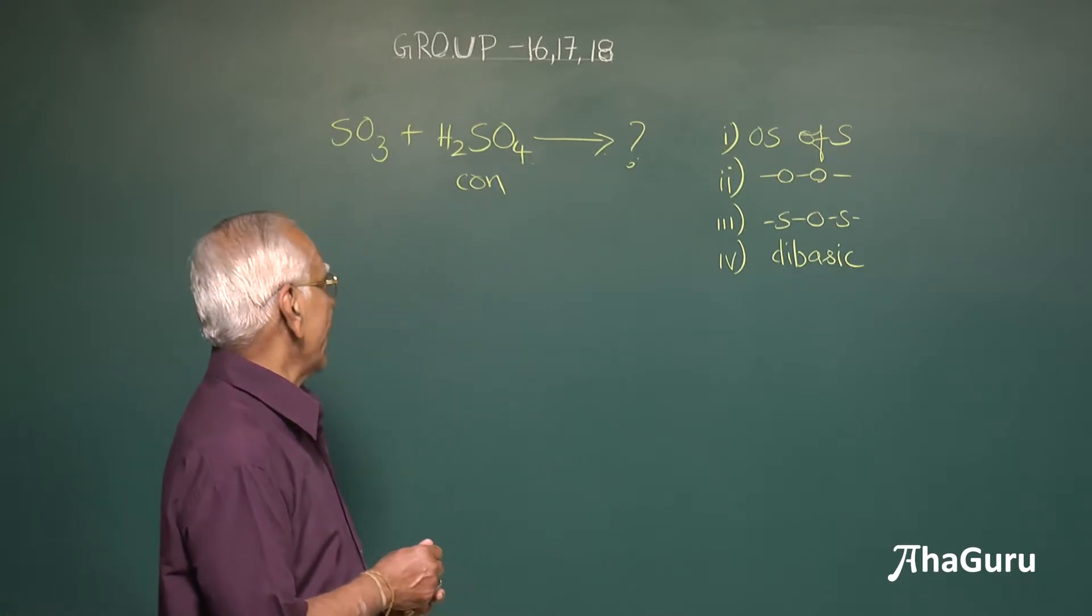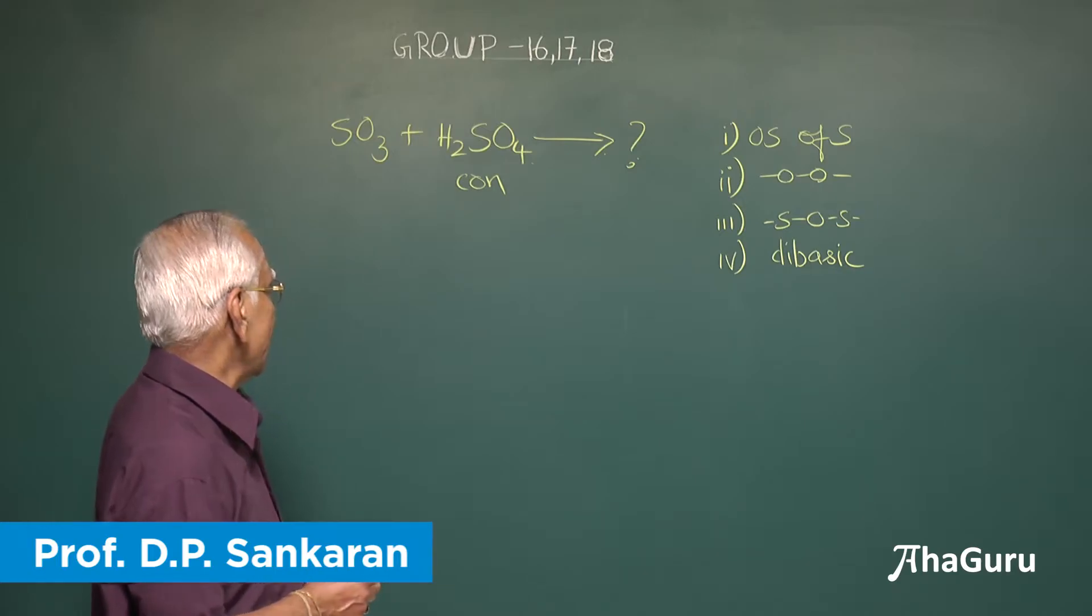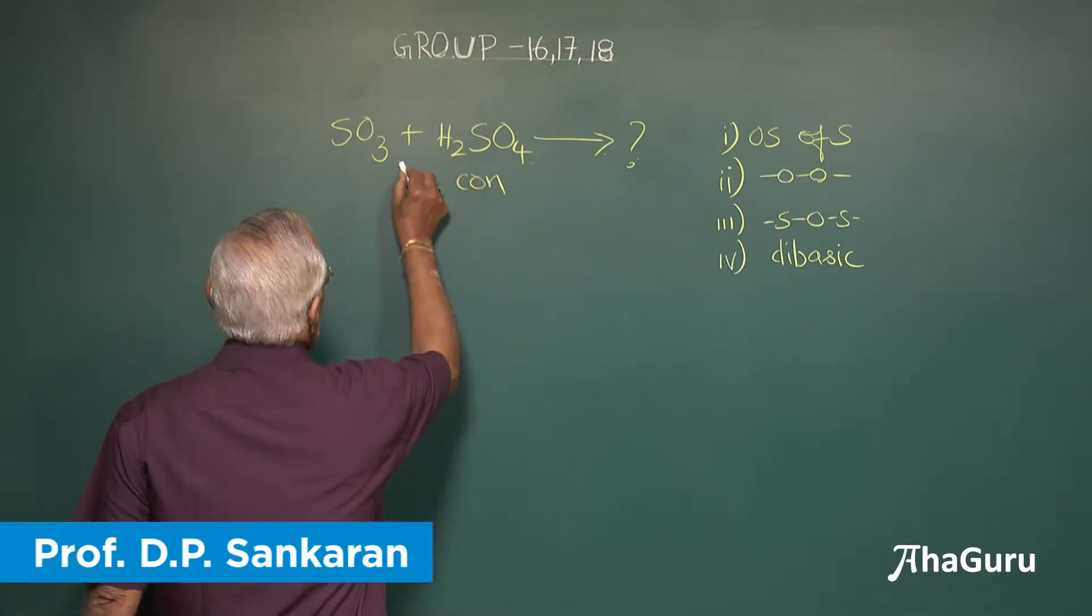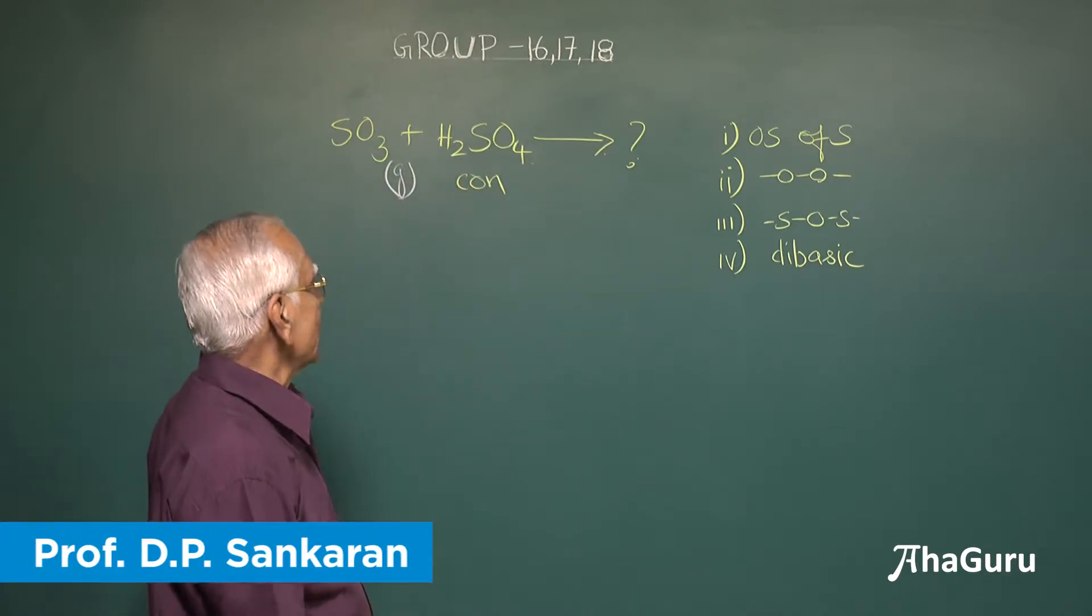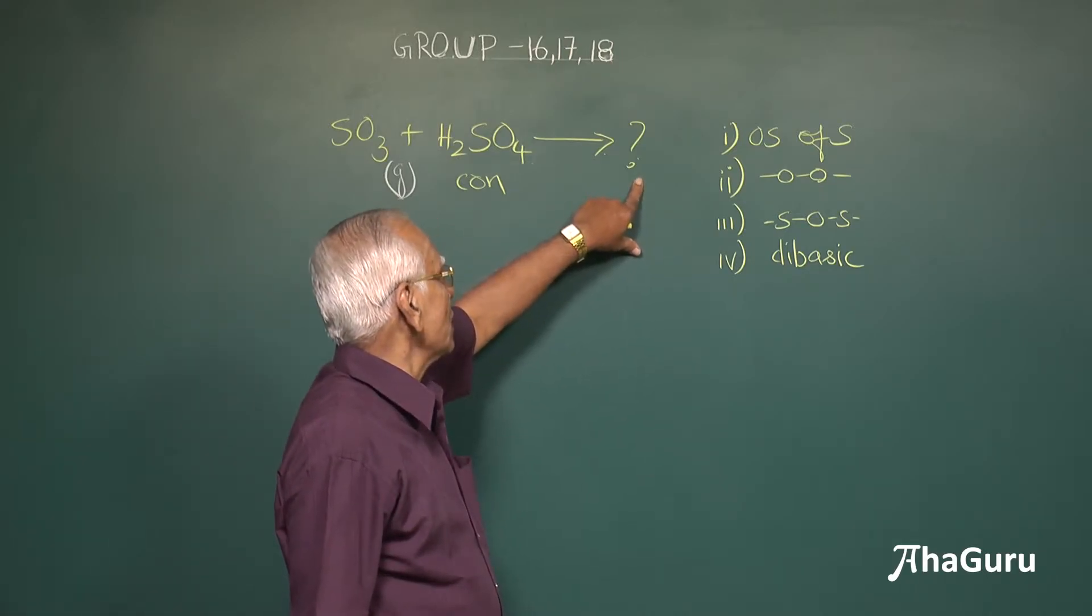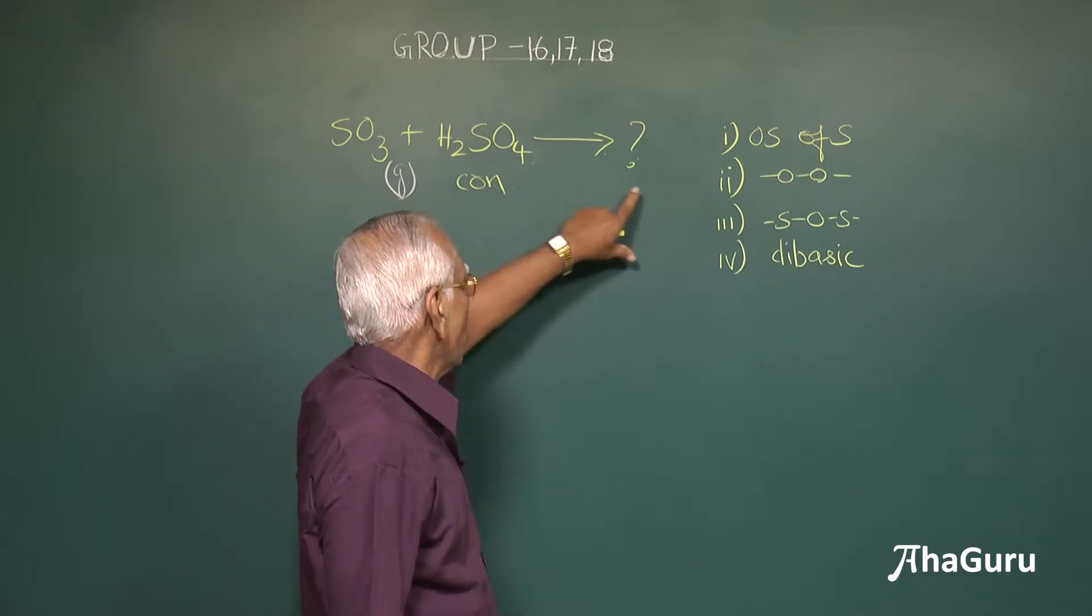Students, you are given a reaction on the board. It says sulfur trioxide is dissolved in concentrated sulfuric acid. Sulfur trioxide is a gas and it is passed through, it gets dissolved, it is soluble in this and the product is obtained. And you are asked to identify the incorrect statement regarding the product here.